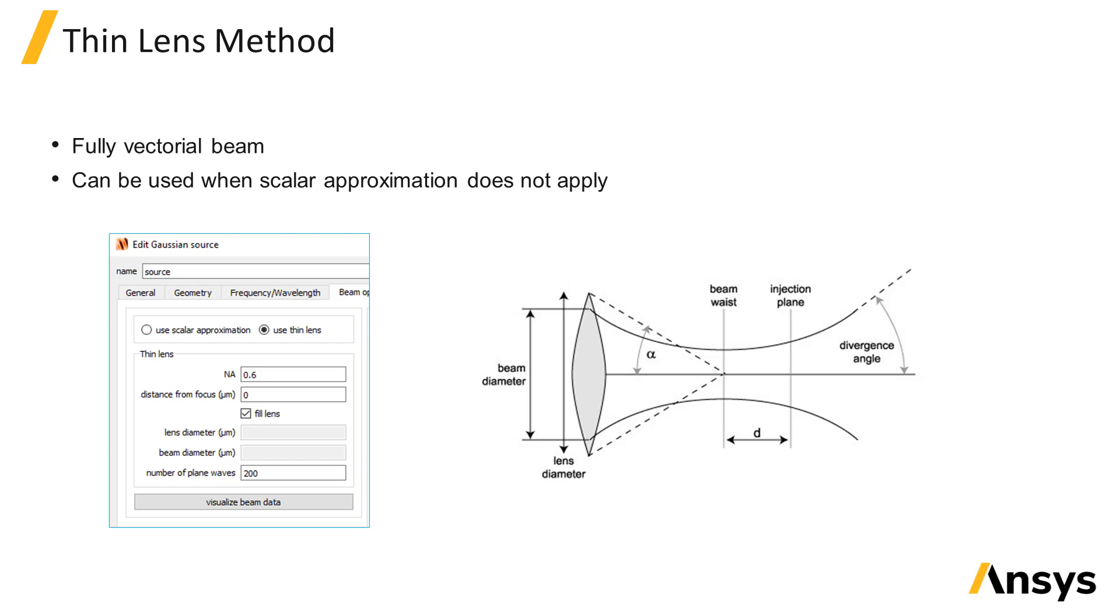The thin lens method injects a fully vectorial beam where the beam profile is calculated by a sum of plane waves traveling at different angles, representing the resulting beam from a lens of a given numerical aperture.